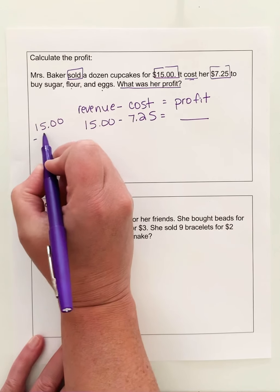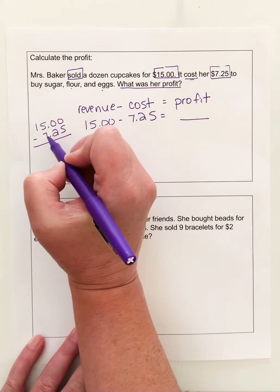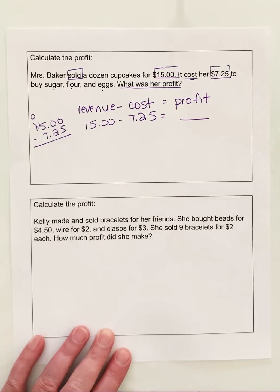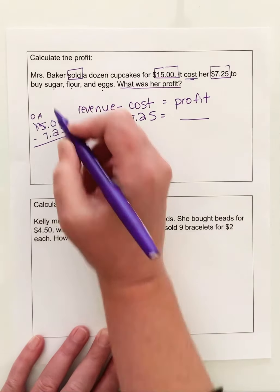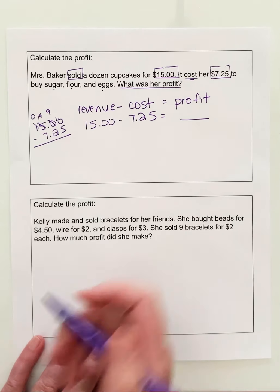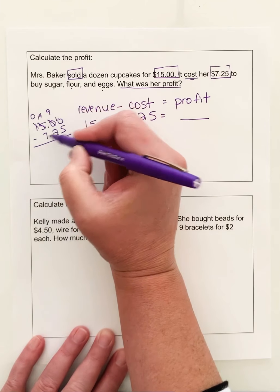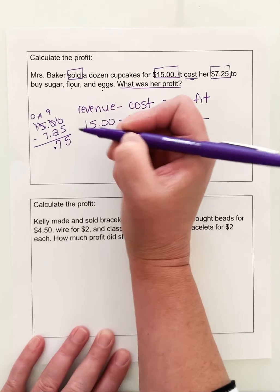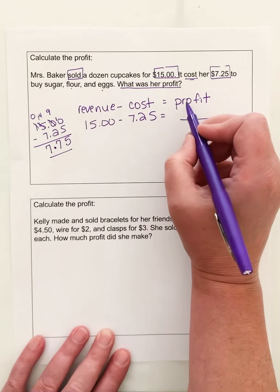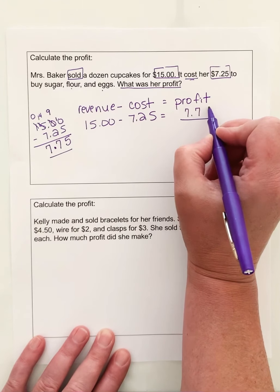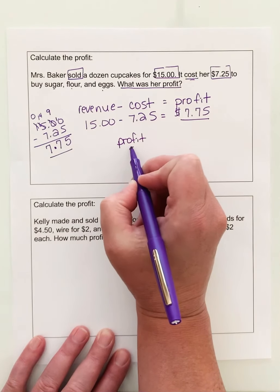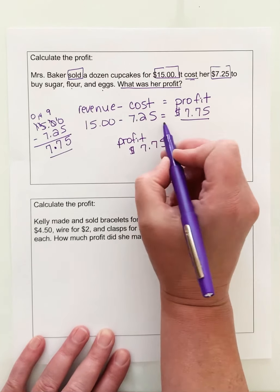So I'm going to come over here. I'm going to calculate and subtract. And I can see I can't take 5 from 0, 2 from 0. I can't take 7 from 5. I'm going to have to regroup. So that gives me 15. Take 1 away, that's 14. That becomes 10. Take 1 away here. That becomes 9. And that becomes 10. Now I can subtract. 10 minus 5 is 5. 9 minus 2 is 7. Drop down your decimal. 14 minus 7 is 7. And of course, 0. So her profit is what is left over after subtracting the cost. So $7.75. So her profit for selling cupcakes, she actually earned and made a profit of $7.75.